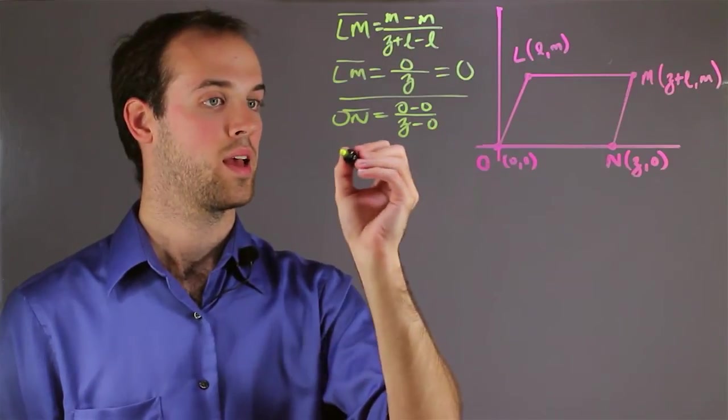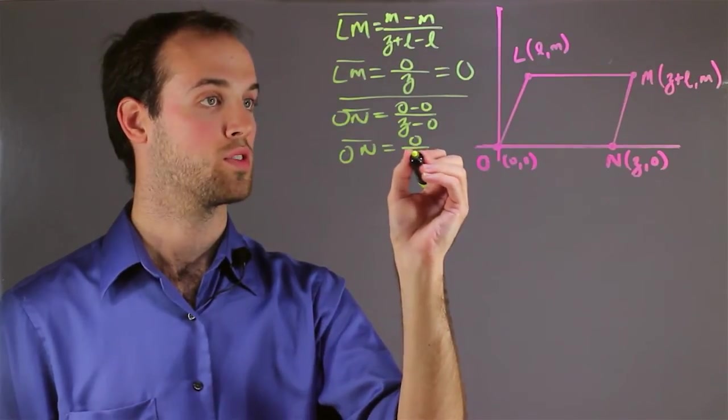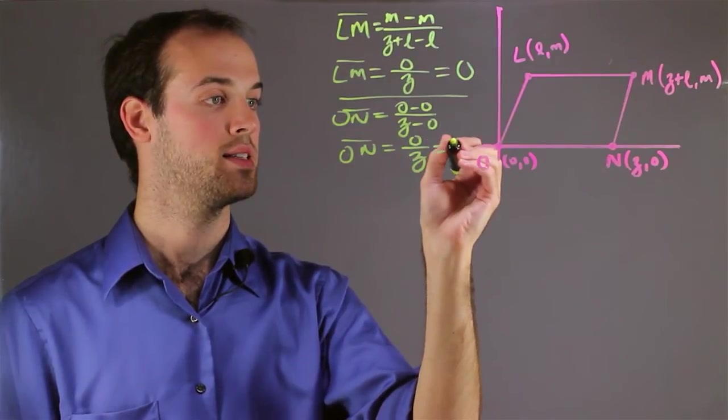And now I get that ON is equal to 0 minus 0, which is 0, over Z, which again is 0.